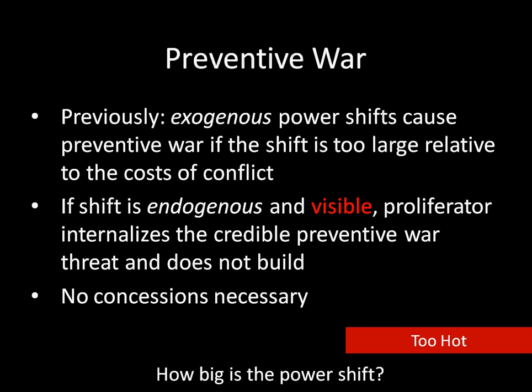One last point: for preventive war to work, a power shift must be endogenous and visible. But can the declining state actually see what's going on? This is a big concern, especially recently among policymakers dealing with international nuclear relations. There are other explanations for why bargaining can fail and why countries develop nuclear weapons, but the visibility problem is particularly pressing in the last 15 years or so. If you can develop nuclear weapons covertly, what happens? How does a declining state respond if it's not sure whether its opponent is developing a nuclear weapon or not? We'll talk more about that in this unit. Hope you enjoyed this lecture—take care.